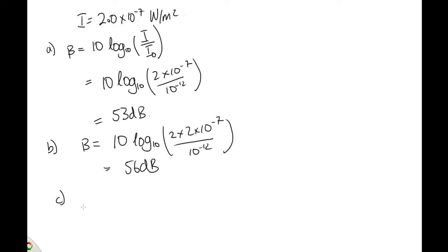Now, part c was how many machines would we need to double the sound level? So our new sound level is 106. And that's equal to 10 log to the base 10. Now, if we have n machines, the intensity will be n times 2 times 10 to the minus 7 over 10 to the minus 12.